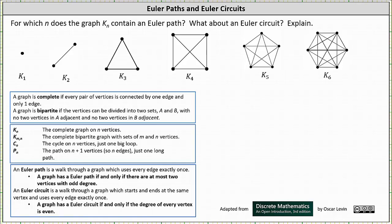For which values of n does the complete graph K sub n contain an Euler path? What about an Euler circuit? Explain.